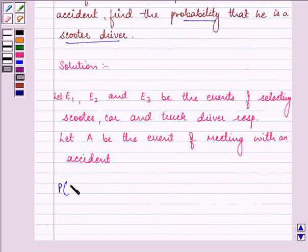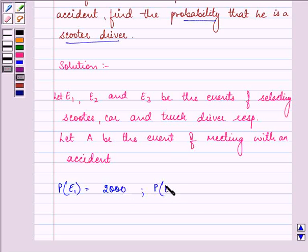Now here, probability of E1, that is a scooter driver, is given to us as 2000. Probability of E2, that is car drivers, are given to us as 4000. And probability of E3, that is truck drivers, is given to us as 6000.